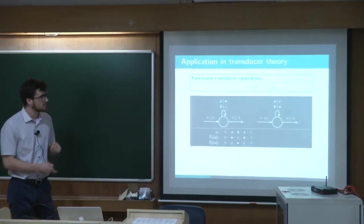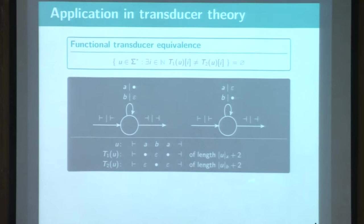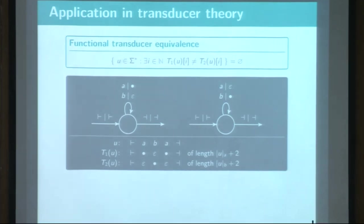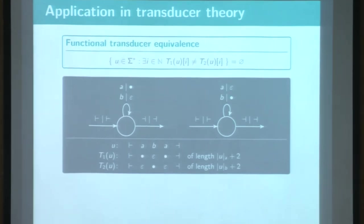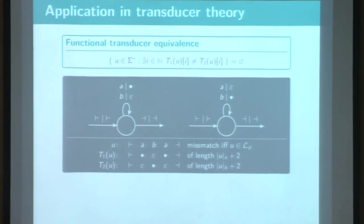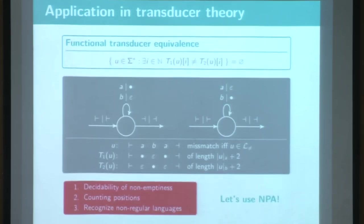And when you think about it, our transducers in fact just count in unary either the number of A, either the number of B. I mean modulo those markers, of course. But then we will have a mismatch if and only if we don't have the same number of A than B in the input word. And this is not regular.